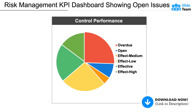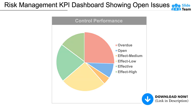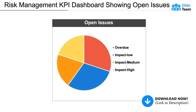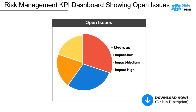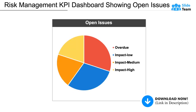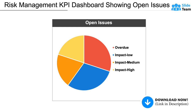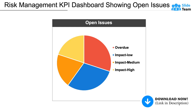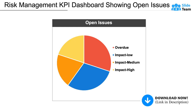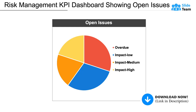With this pie chart, categorize still-open risk incidents based on their impact on operations, budget, or image. Illustrate issues overdue for a longer time using this color-coded circle chart.